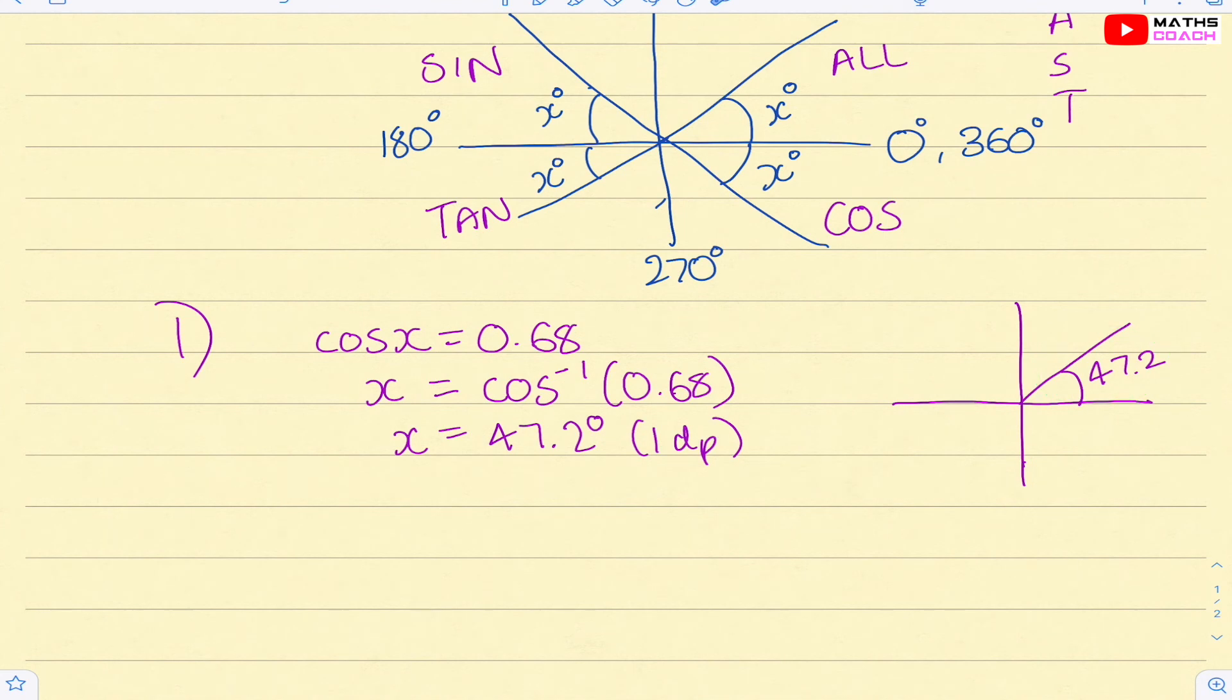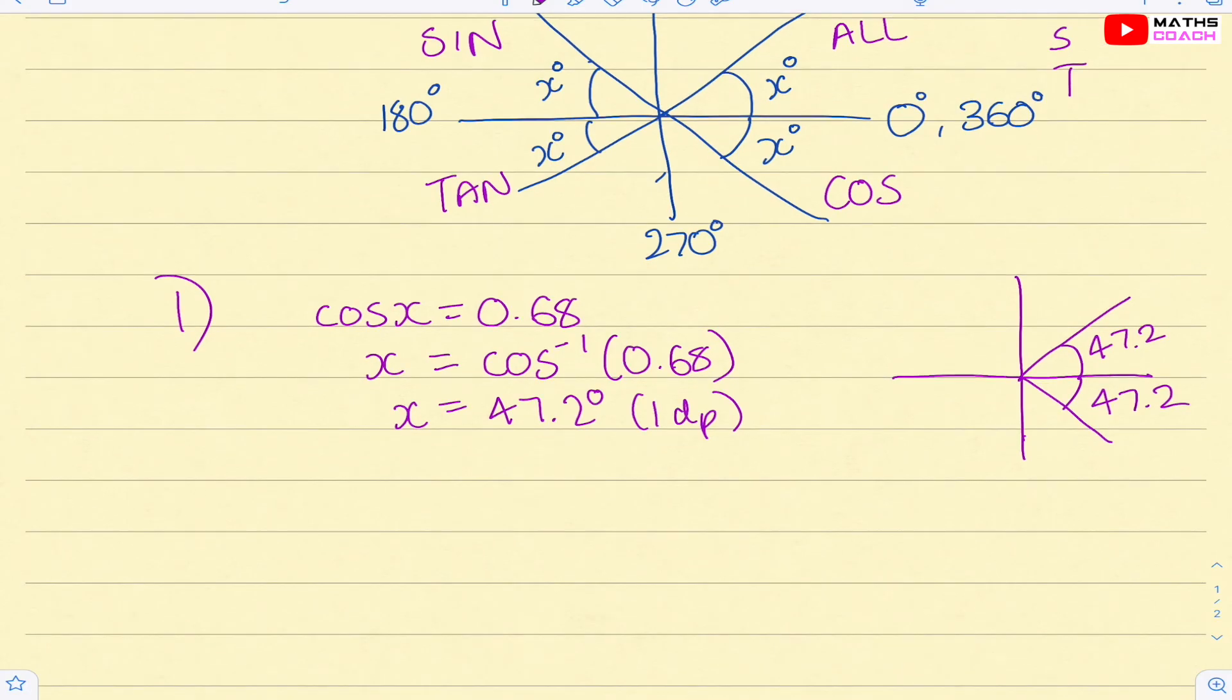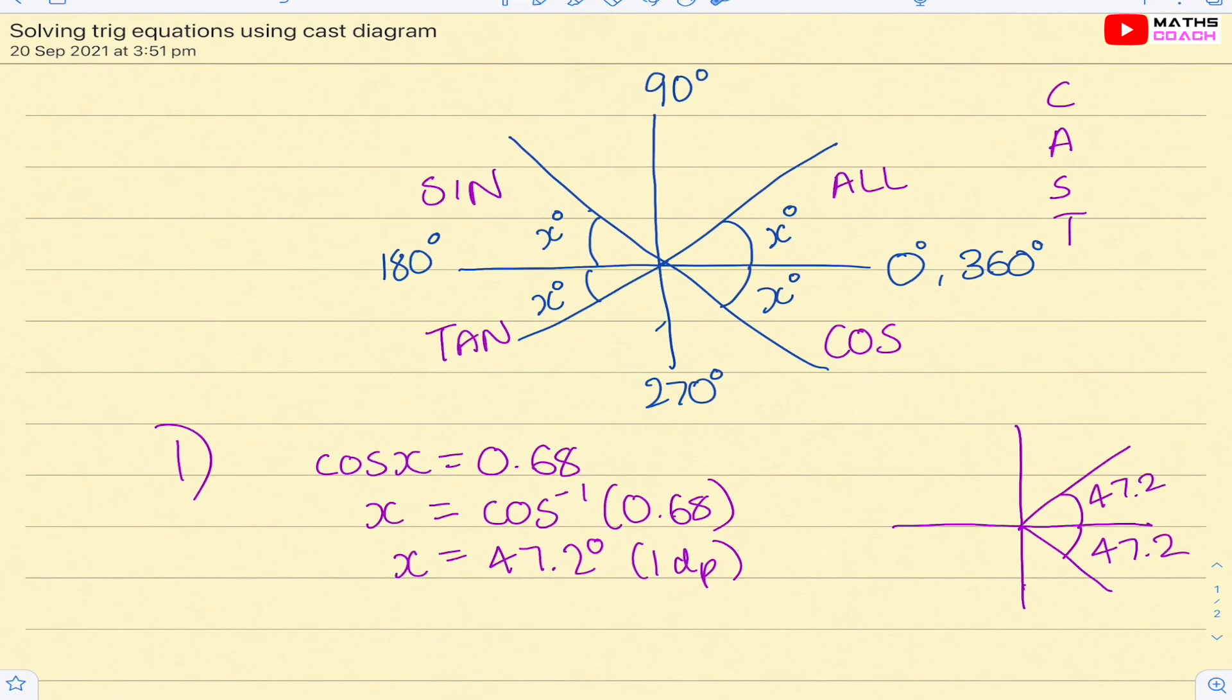So 47.2 forms an acute angle over here. So what we need to do is our intervals between 0 and 360. So that means it's all the way around. So in that case, it can also be an angle here of 47.2. Now, the way we do that is we say we are going in the positive direction. So it will be going clockwise.